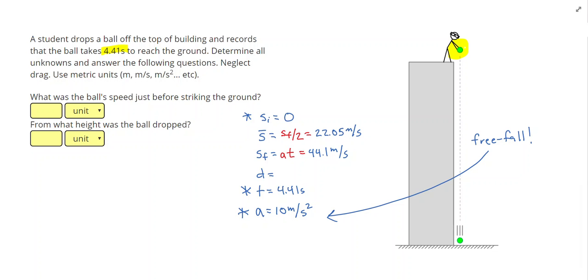And lastly, I can calculate the distance by doing the average speed times the time, which gives me 22.05 times 4.41, and that would round to 97.2 meters.